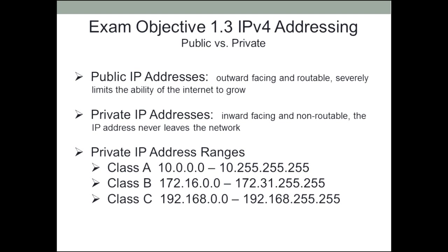There are three private IP address ranges, and you need to know these for the Network+. There is the Class A private addressing scheme, with a range of 10.0.0.0 through 10.255.255.255. Class B was a little more restricted: its range was 172.16.0.0 through 172.31.255.255. And finally there is the Class C private address range: 192.168.0.0 through 192.168.255.255.